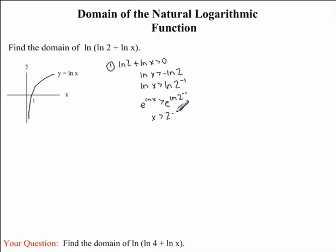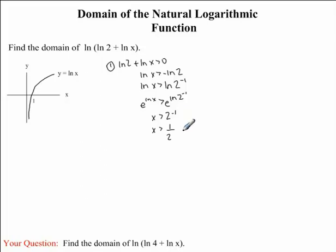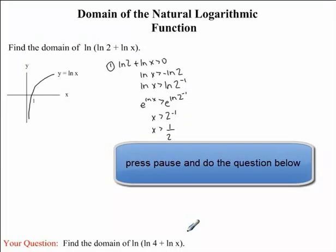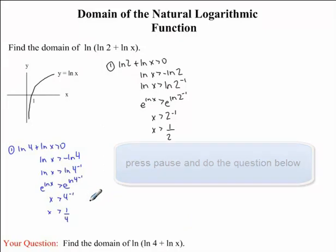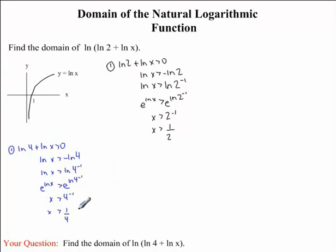This helps us isolate for x easily. Lastly, we can change the exponent to be positive by writing this as a fraction — 2 to the negative 1 goes into the denominator. So we have x is greater than 1 over 2. Since 2 to the exponent positive 1 is simply 2, we have the restriction that x must be greater than 1 half. I would now like you to state this first restriction in the question you are given. In your question, you should have found that x must be greater than 1 quarter.